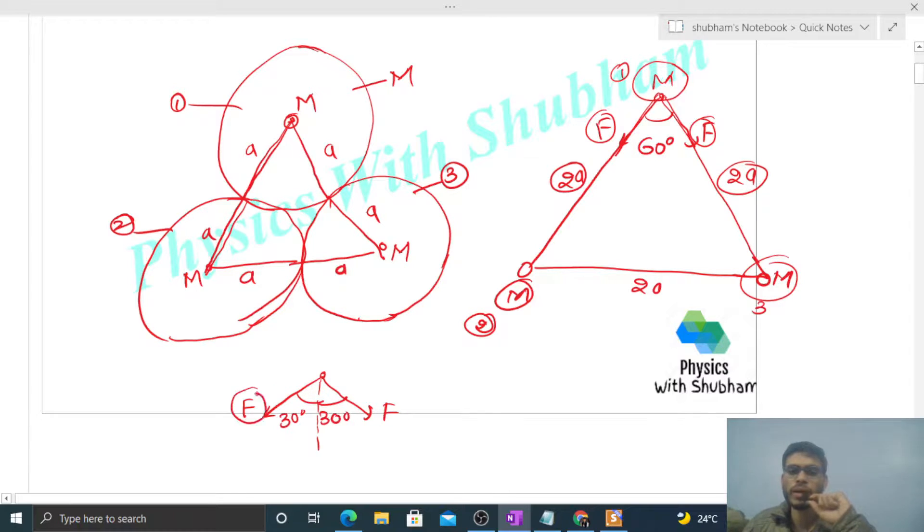So you can see, F cos theta in this direction - that is F × √3/2. And this will also be the same: F × √3/2. These will add up. And the sine component, the F sin 30 component F/2, F/2 - those will cancel out.